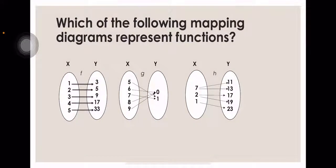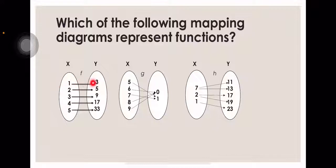Next: which of the following mapping diagrams represent a function? We will look at each one to determine if it is a function or not. The first mapping diagram — looking at our X values, each X value has a unique output, meaning it is 1-to-1. For each X value there is one Y value, so that is a function. Remember: when a mapping diagram is 1-to-1, it is a function.